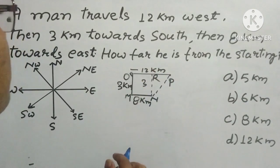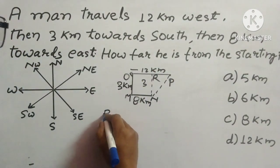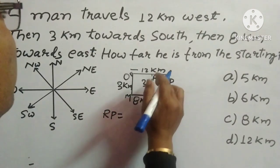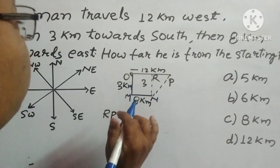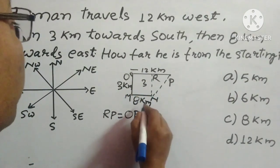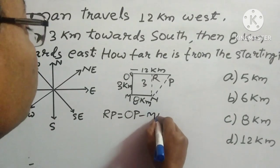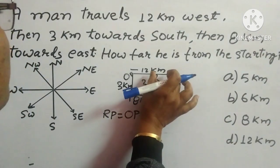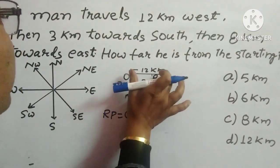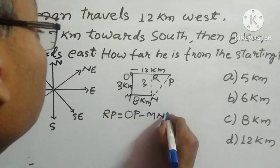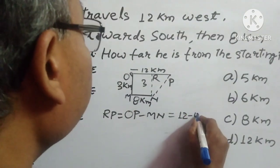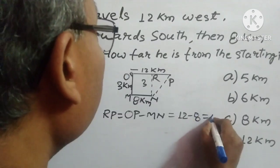So RP will be how much? RP will be 12 minus 8, which is OP minus MN. So this distance is 12 minus 8, which is equal to 4.